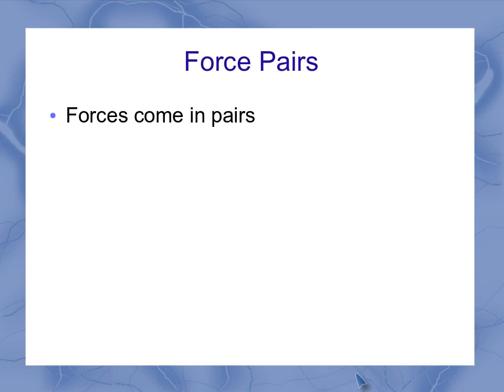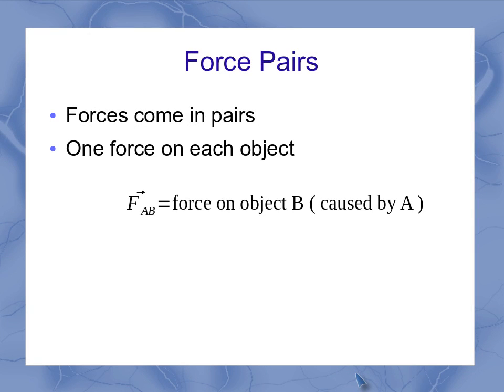So that means we've got force pairs. One force of this pair is acting on each object. So when I had those two forces, the FAB was the force on object B caused by object A, or you could think of it as the force that A causes on B.